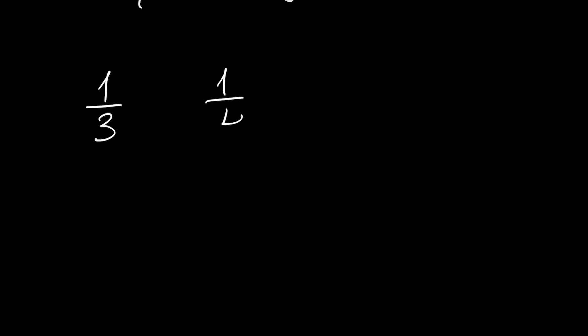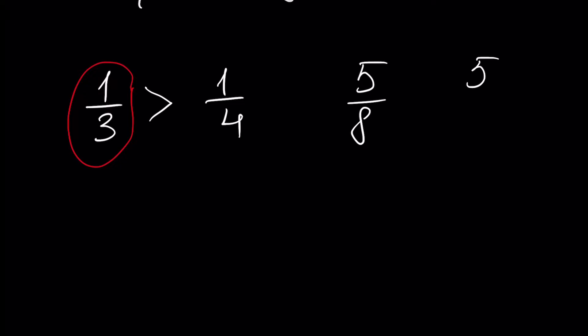If two fractions have the same numerator, say 1 over 3 and 1 over 4, then obviously the larger fraction is that with the smaller denominator, because the number 1 is divided by a smaller number — that's why 1 over 3 is bigger. Another example: 5 over 8 and 5 over 9. Here 5 over 8 is bigger because 5 is divided by 8, a smaller number, so the result is bigger.